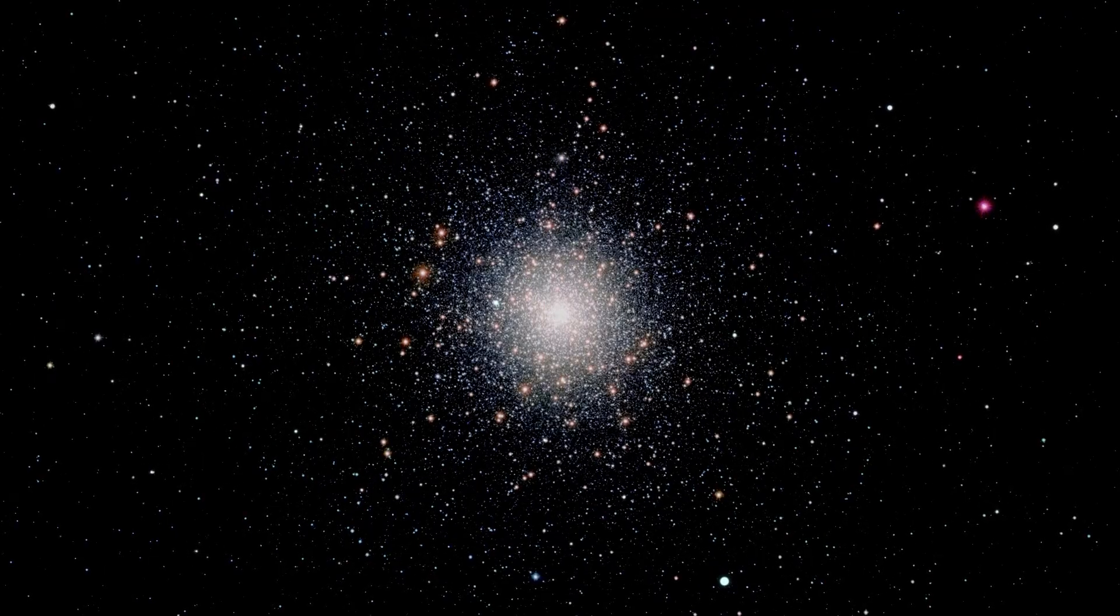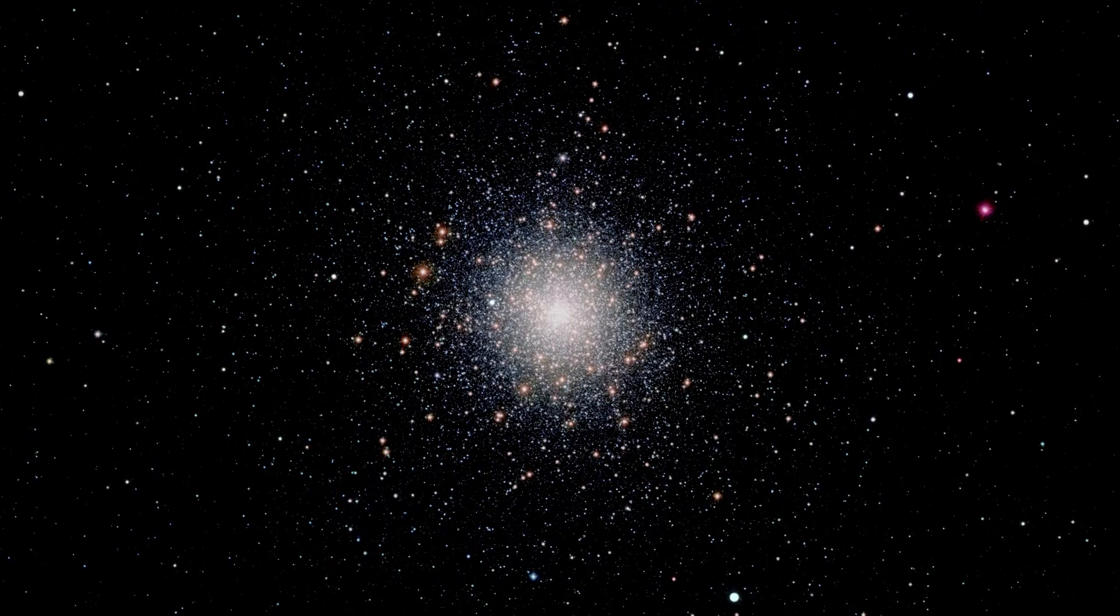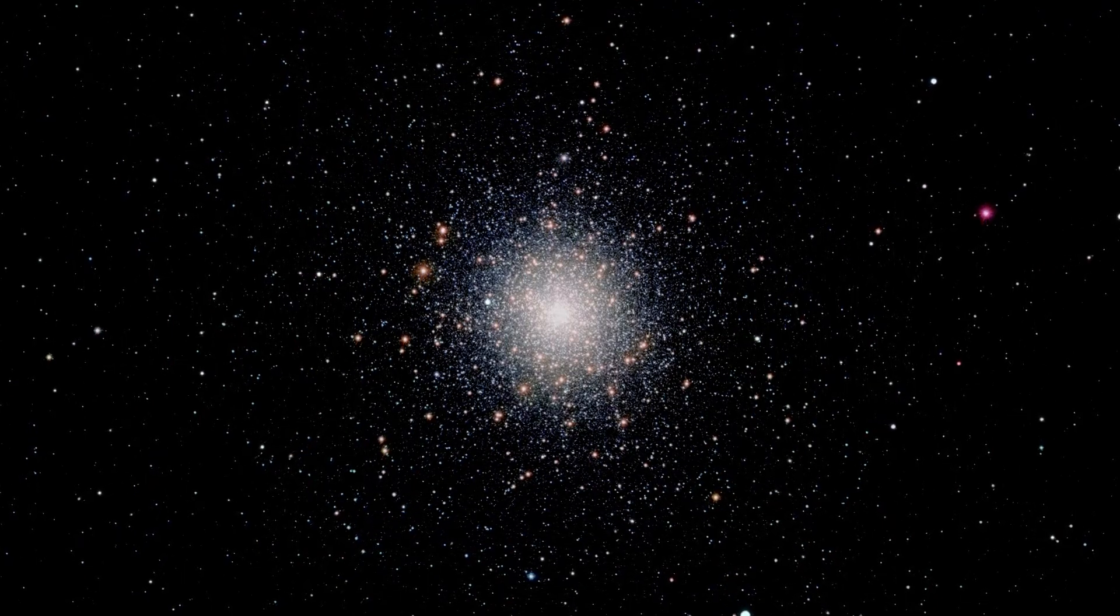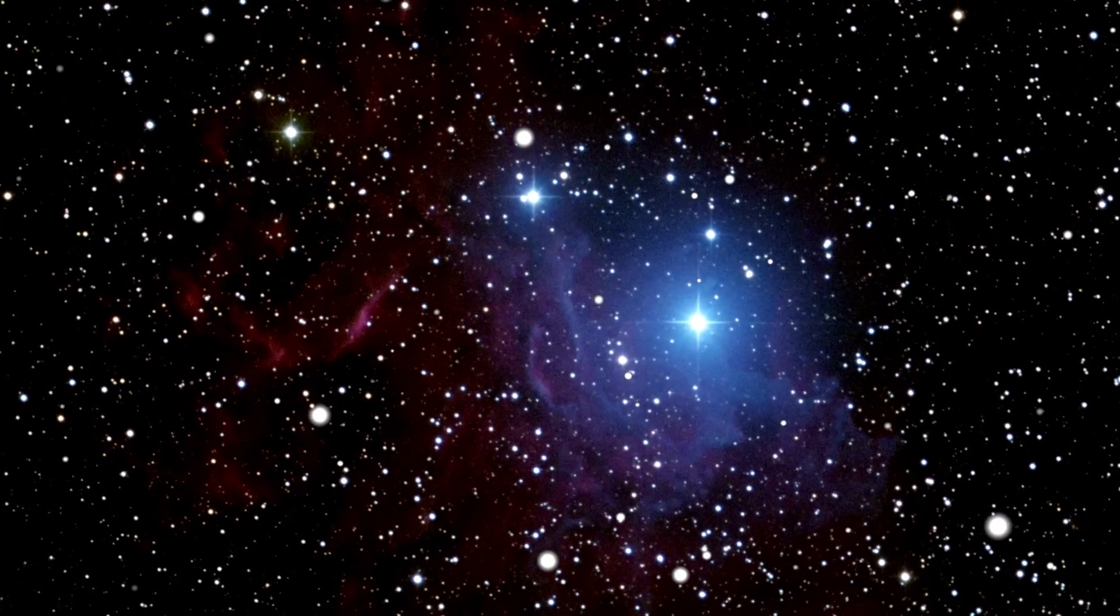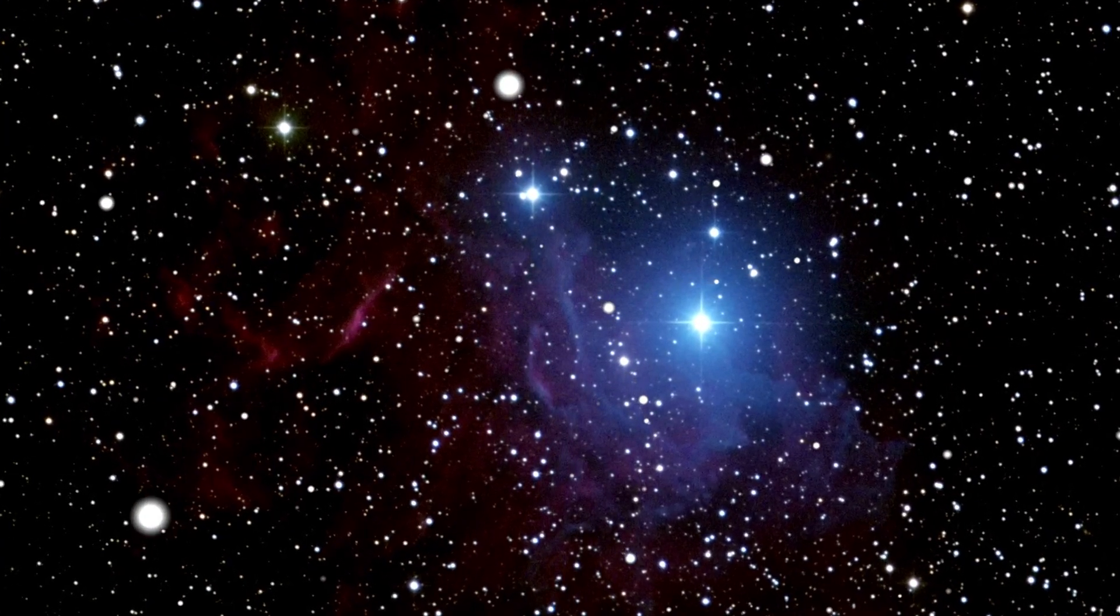Most stars form in clusters within galaxies where the density of gas and dust is high enough for star formation to occur. These stars are surrounded by a disk of material called an accretion disk, which feeds the star as it grows.